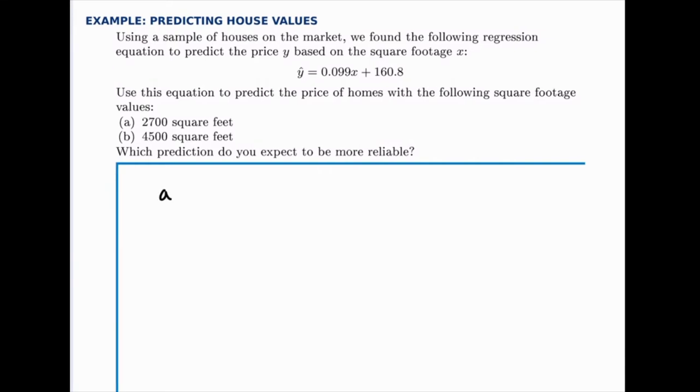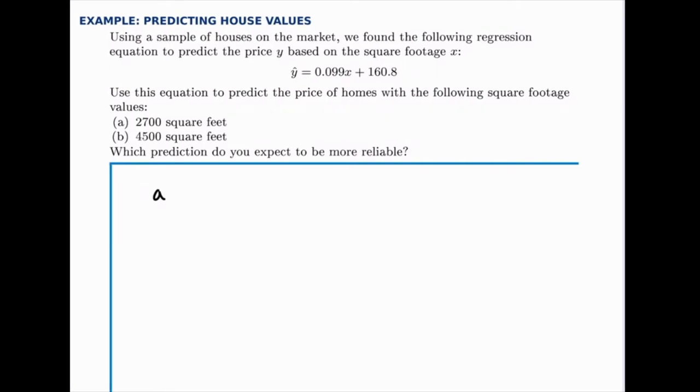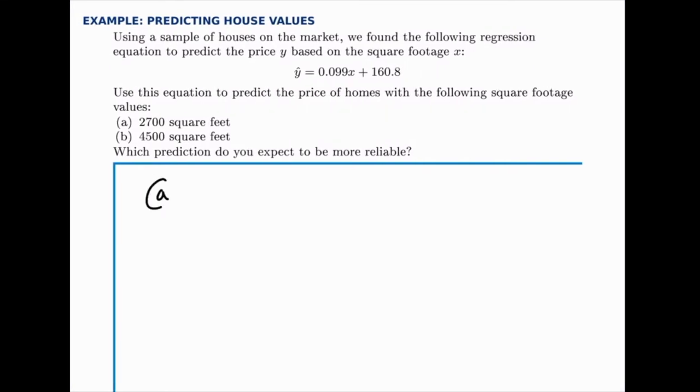So all we have to do in each case is replace x with the given value for square footage. In the first case, we have y hat equals 0.099 times 2700 plus 160.8, which works out to 428.1.